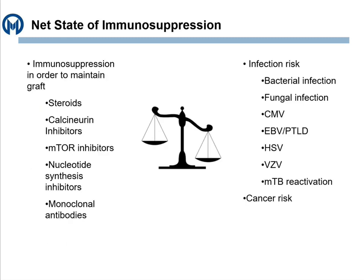The net state of immunosuppression is a very important concept. Usually we just identify the bug, pick the drugs, pick the duration, and sign off the case. But in transplant, when you look at the patient, you have to think about the competition between all the immunosuppression being given to maintain their graft — whether it's a bone marrow graft or a solid organ — whether it be steroids, calcineurin inhibitors, mTORs, or all the other variety of drugs. The flip side is that the more immunosuppression, the more infections — whether bacterial, fungal, viral, or even TB reactivation — as well as secondary cancer risk. You can't quantify it, but you can actively think about it when assessing a patient.